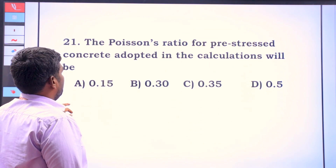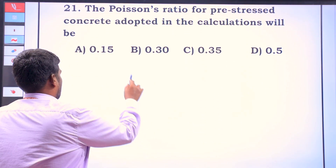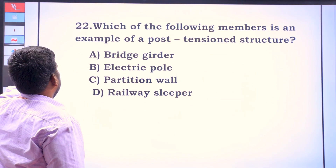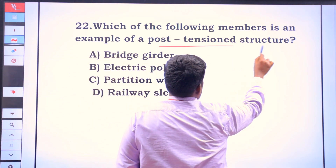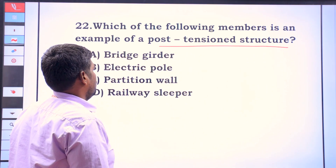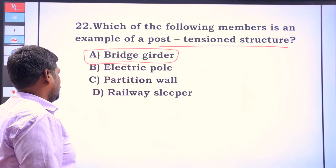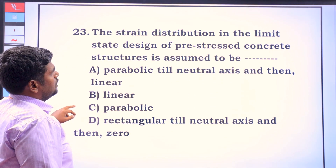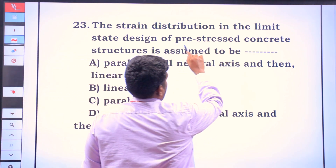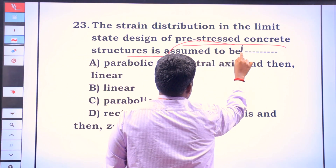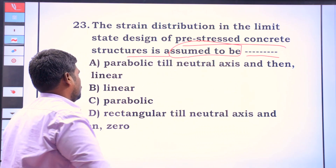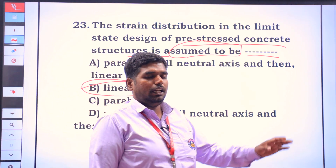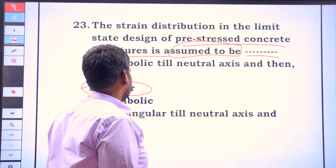The Poisson's ratio of pre-stressed concrete is 0.15. Which of the following is an example of a post-tensioned structure? A bridge girder is the post-tensioned example. The strain distribution in a limit state design of pre-stressed concrete structures is assumed to be linear.